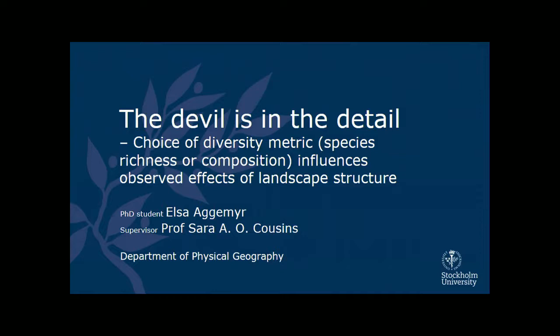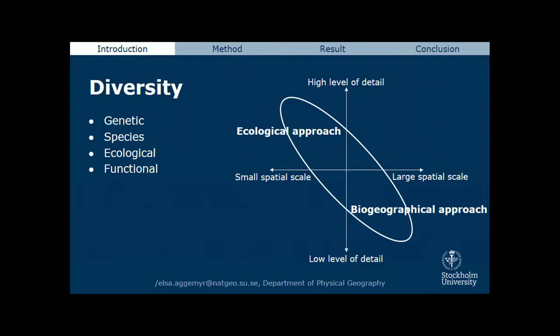We can measure diversity at different levels — genetic, species, ecological, or functional — and at a low or high level of detail, or small or large spatial scale. Most biographical studies take a top-down approach at larger spatial scales, often using species richness.